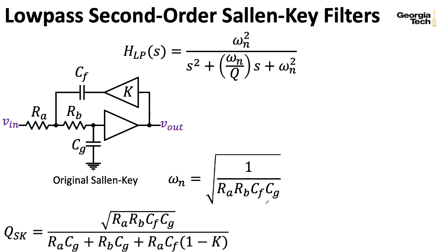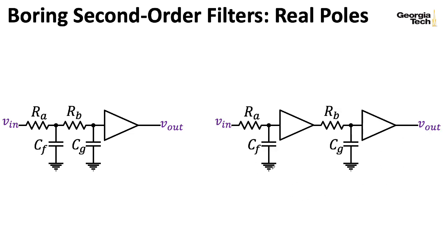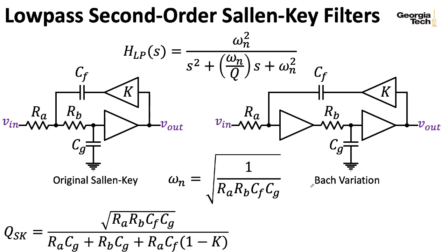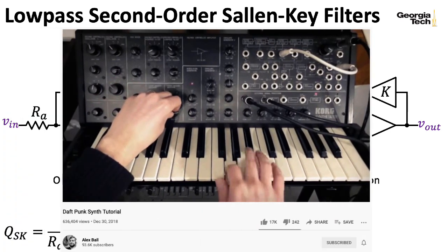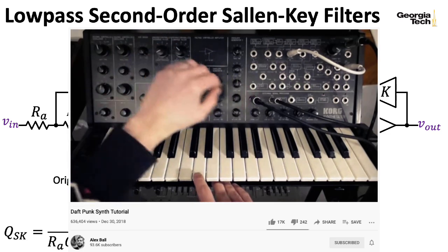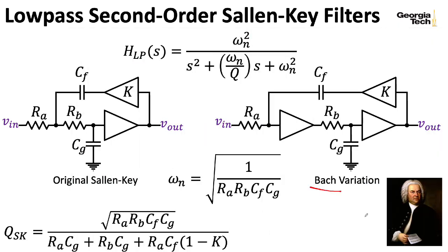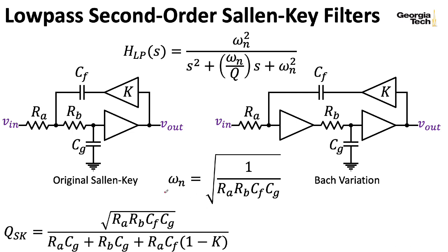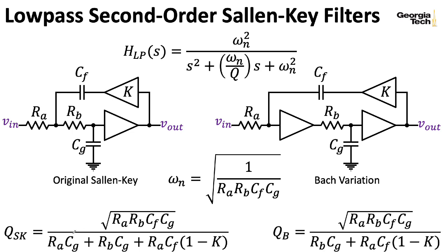There's a variation of this filter based on doing the bootstrap trick on another version of the circuit that looks quite similar. I started searching for a name for this configuration when studying the filter in the MS-20, and I finally found a paper by someone named Bach — not that Bach, a different Bach. The natural frequency of this Bach variation is the same as what I'm now calling the original Sallen-Key. When people say Sallen-Key, they're generally referring to that particular version, unless they're talking about the MS-20, not recognizing the difference introduced by the first buffer.